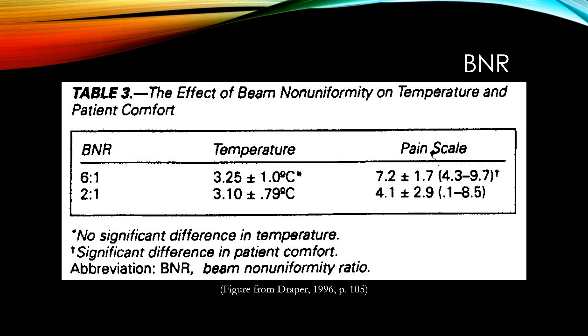In a clinical ultrasound treatment there shouldn't be any pain, but you can see from the BNR image with that spiky point at 6 to 1 that really intense ultrasound concentrated in a particular area — rather than spread out evenly — can cause pain. BNR becomes particularly important when you are working on a part of the body that doesn't have a lot of soft tissue, such as the upper extremity — the elbow, forearm, wrist, and hand. With a high BNR, you wouldn't have much soft tissue to absorb that spike in intensity, so BNR is something you really want to think about when purchasing a machine for use in the upper extremity.